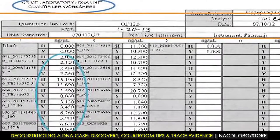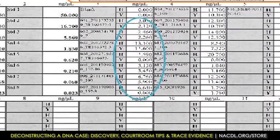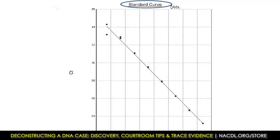I look at how much DNA we have before we add anything to it. One sample, for instance, is 2.26 nanograms per microliter. That's a lot—we're only shooting for 0.5 nanograms per microliter for our amplification process. Then we look at whether the quant curve is good. The quant curve is actually a straight line. If you ever get in a discovery packet one that looks like a C or a moon, there's a problem. You're shooting for a straight line. They'll usually redo this until they get a straight line, so you typically won't see a bad one in your discovery packet.